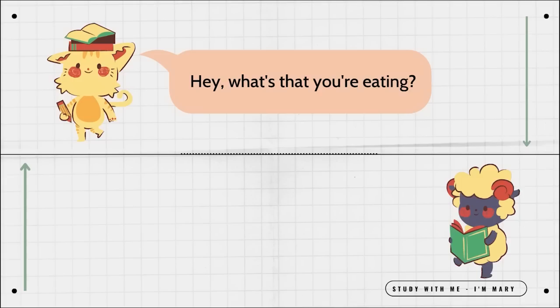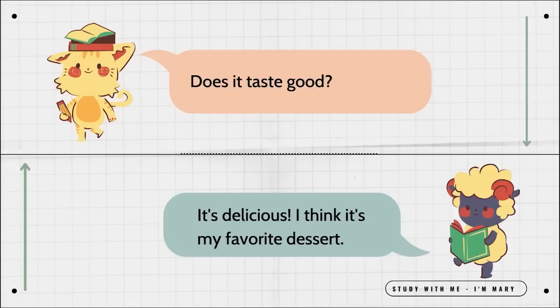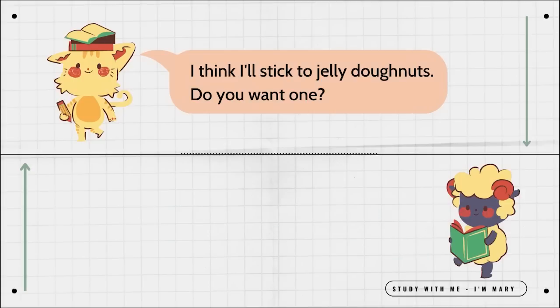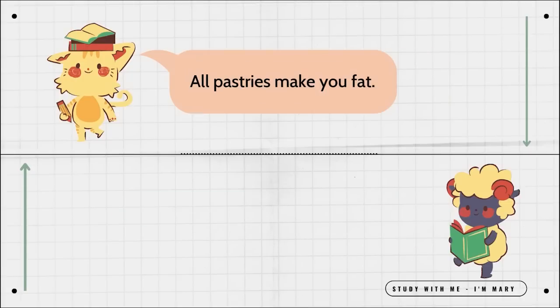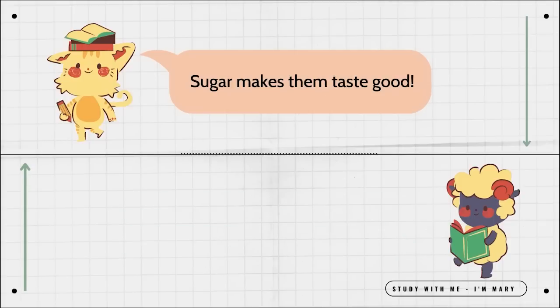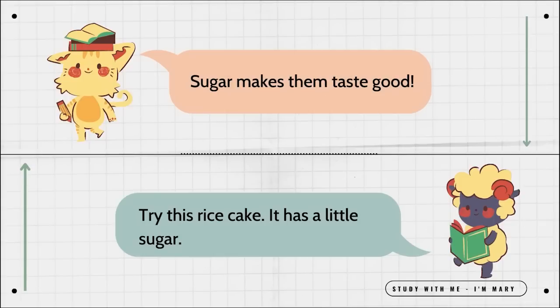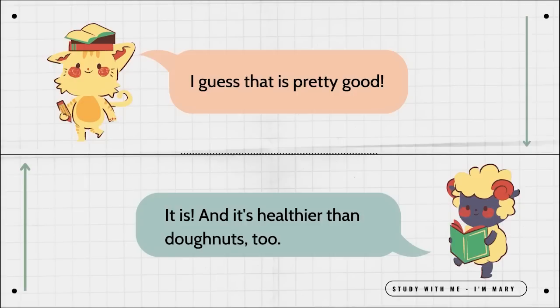Hey, what's that you're eating? It's steamed rice cake. My grandma made it. Does it taste good? It's delicious. I think it's my favorite dessert. I think I'll stick to jelly donuts. Do you want one? No, thanks. If you eat too many of those, you'll get fat. All pastries make you fat. That's true. But the ones with sugar are the worst. Sugar makes them taste good. Try this rice cake. It has a little sugar. I guess that is pretty good. It is. And it's healthier than donuts, too.